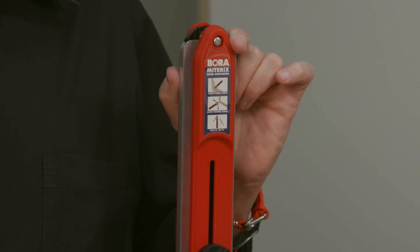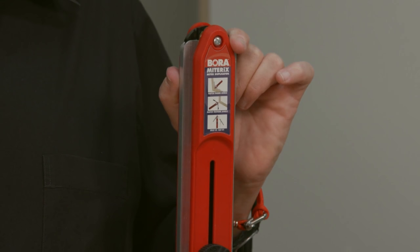Let me introduce you to the Bora Mitre X. Gets you the perfect angle every time. One of the hardest parts of carpentry is getting precise angles. With the Bora Mitre X Angle Duplicator, that becomes the easiest part. Let me show you how this works.